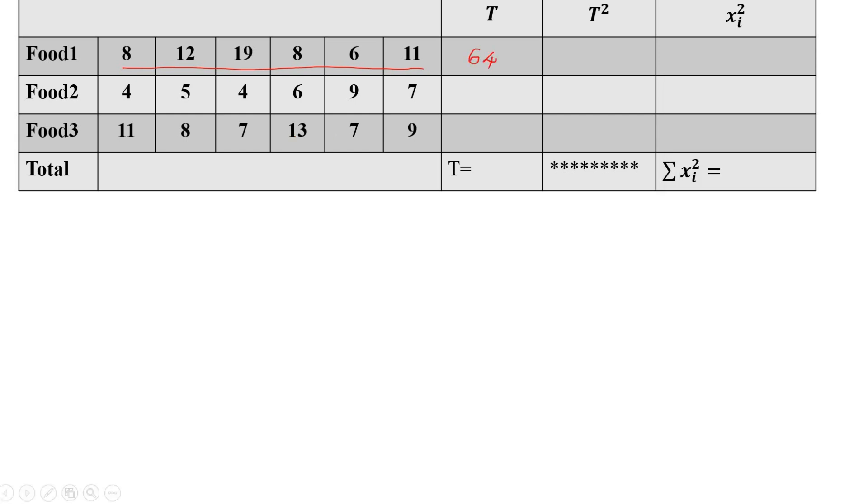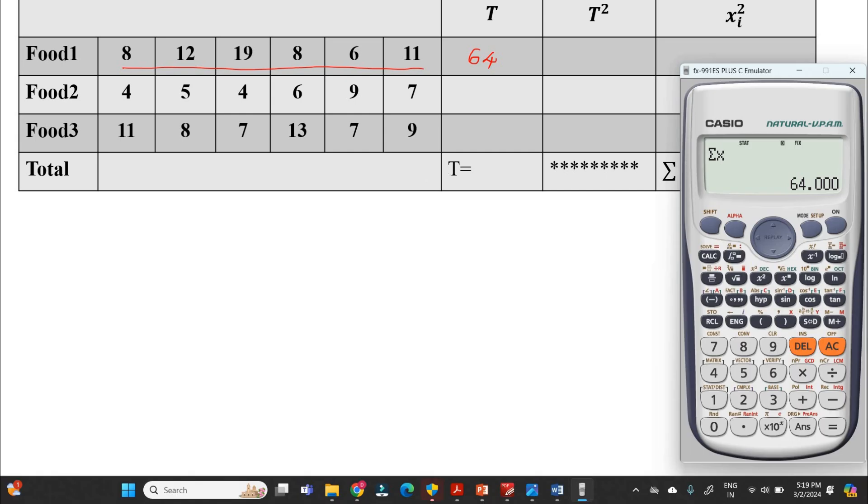Similarly calculate for food 2. I will go with the same procedure, that is stats 1-variance, or you can just consider the data directly. You will get that data: 4, 5, 4, 6, 9, 7. Then press AC, then consider shift 1, in that sum.